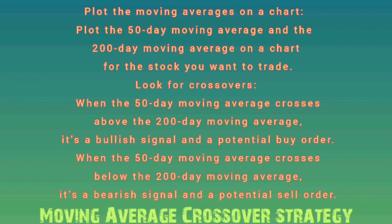Look for crossovers. When the 50-day moving average crosses above the 200-day moving average, it's a bullish signal and a potential buy order. When the 50-day moving average crosses below the 200-day moving average, it's a bearish signal and a potential sell order.